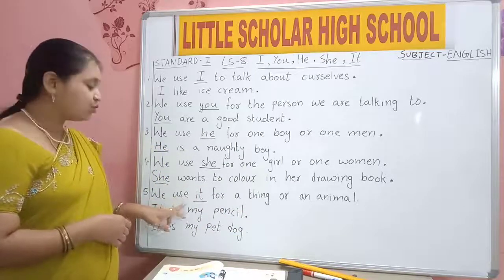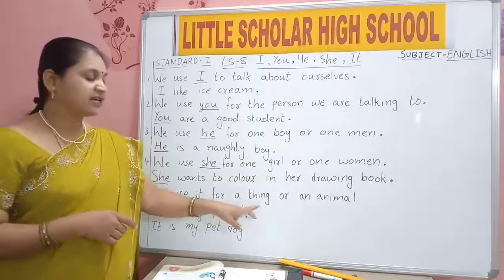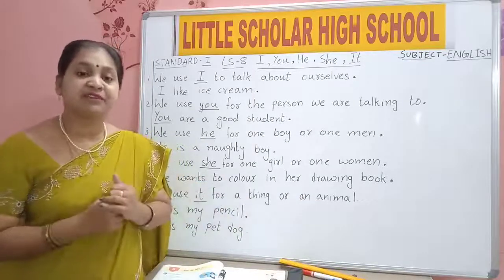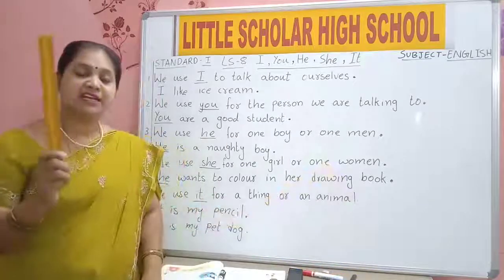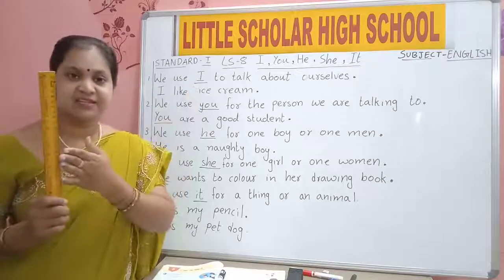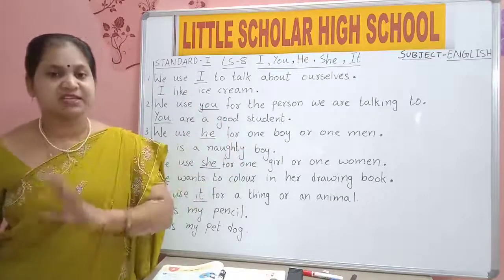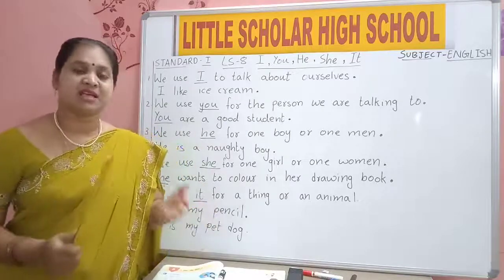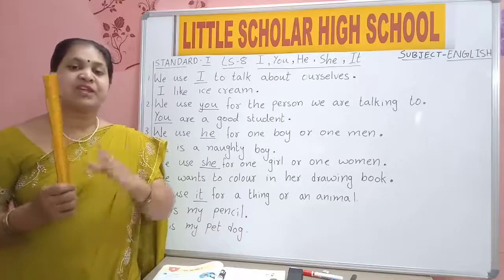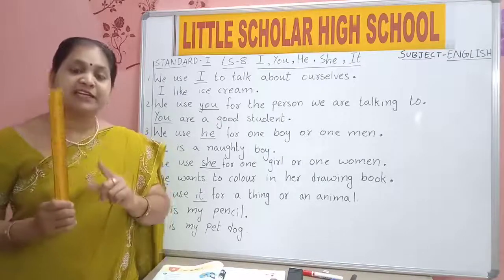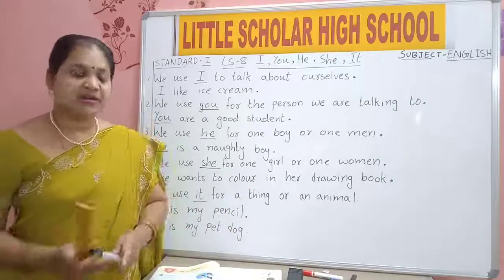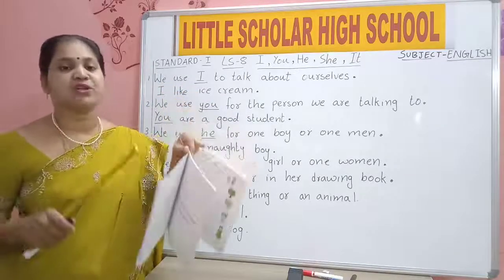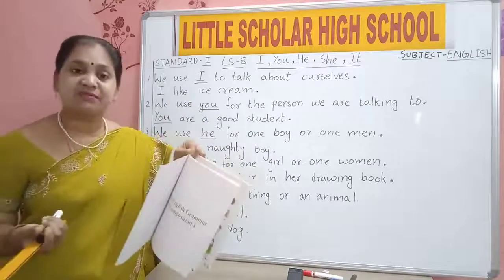We use IT for a thing or an animal. We use IT for talking about things. Now say what is this? It is a scale. We can't say 'She is a scale' or 'He is a scale.' HE is used for boys, SHE is used for girls, and IT is used for things — and also for animals and birds. It is a scale. It is a marker. It is a book. Because these all are things. For boys we use HE, for girls we use SHE, and for things we use IT.